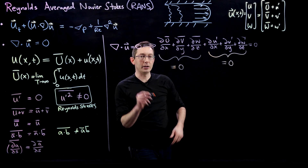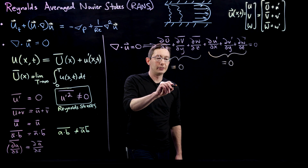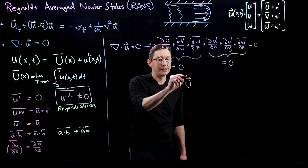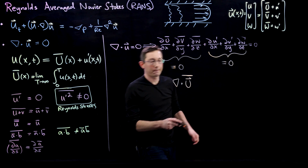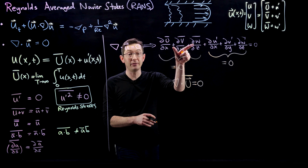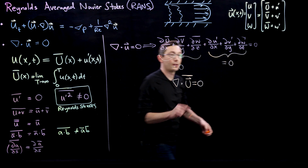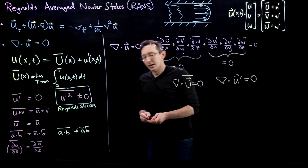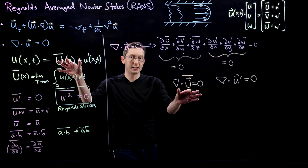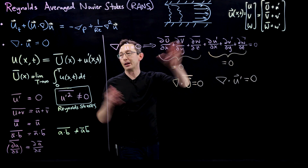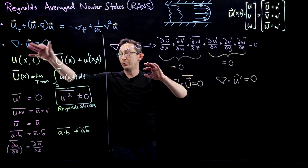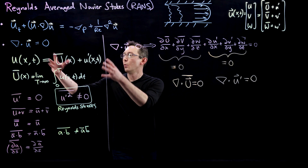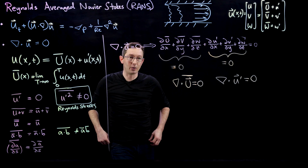Since the mean-flow terms sum to zero, the remaining fluctuating terms must also sum to zero in the original equation. So we've derived two important conditions from one divergence equation: the divergence of the mean field ū equals zero, and the divergence of the fluctuating component u' also equals zero. The mean flow is divergence-free, and the fluctuating component is also divergence-free — derived simply by plugging the Reynolds decomposition into the incompressibility equation and time-averaging.